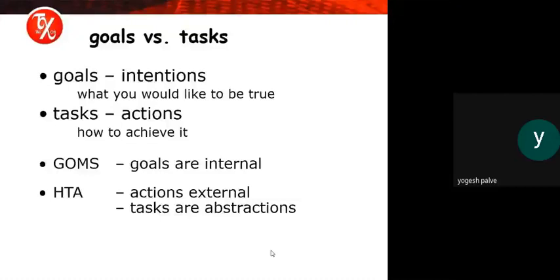Goals versus tasks: a goal is what you have the intention to achieve — what you would like to be true. A task is the actions needed on how to achieve that goal. In GOMS, goals are internal. There is also the concept of HTA (Hierarchical Task Analysis) where actions are external and tasks are abstractions.